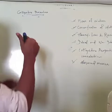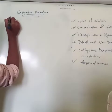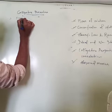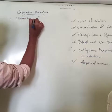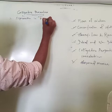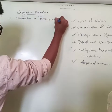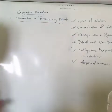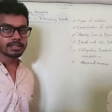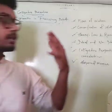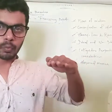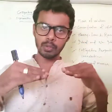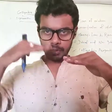The next colligative property is depression of freezing point. What is freezing point? It is the temperature at which the vapor pressure of a liquid equals the vapor pressure of the solid.